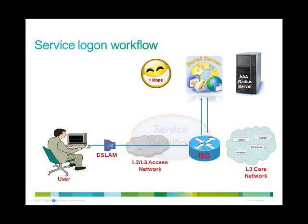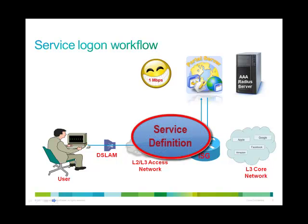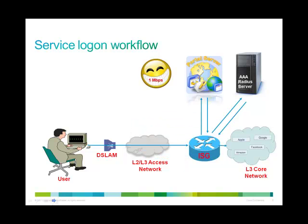To allow the user to access the services, the ISG requires the service definition associated with the service. The ISG retrieves the service definition from the AAA server and uses this information to give the user access to the required service. The user can now enjoy the upgraded service.